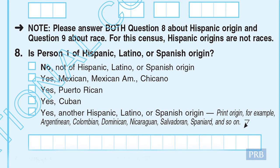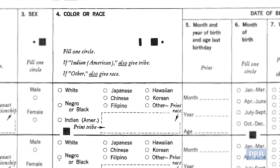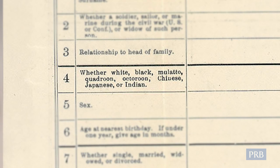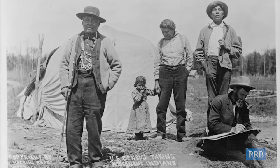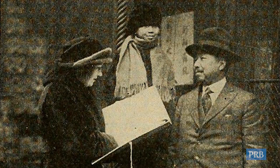There was also a separate question on Hispanic origin, where people could identify with a particular ethnicity, such as Mexican American. The census questionnaire has changed over time. In fact, the question about race has changed in nearly every census since 1790. Back in 1910, census takers would actually choose your race for you, instead of allowing people to select their own race.